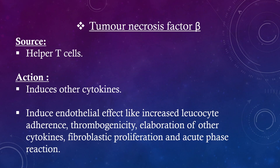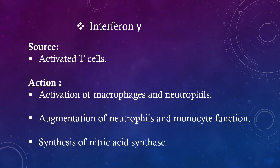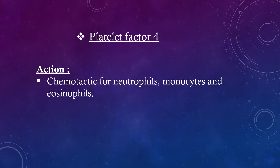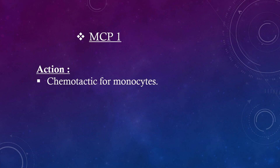Tumor Necrosis Factor beta (TNF-beta) source: helper T cells. Actions: induces other cytokines, increased leukocyte adherence, thrombogenicity, elaboration of other cytokines, fibroblastic proliferation, and acute phase reaction. Interferon gamma (IFN-gamma) source: activated T cells. Actions: activation of macrophages and neutrophils, augmentation of neutrophil and monocyte function, synthesis of nitric oxide synthase. Chemokines: Platelet Factor 4 — chemotactic for neutrophils, monocytes, and eosinophils. MCP-1 — chemotactic for monocytes. Eotaxin — chemotactic for eosinophils.